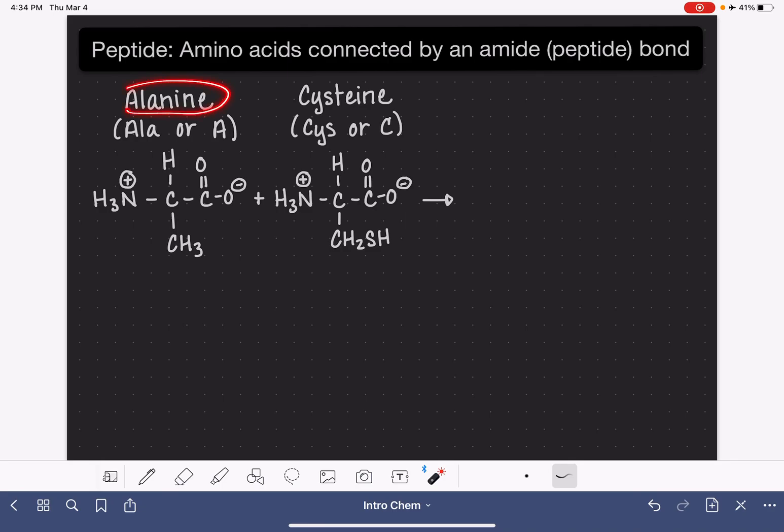I'm going to be using alanine and cysteine as my examples. These amino acids will bond together, connecting at the carboxylic acid group of one amino acid and the amine group of the second amino acid. This is their point of connection.